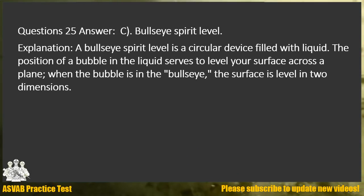Question 25. Answer C. Bullseye spirit level. Explanation: A bullseye spirit level is a circular device filled with liquid. The position of a bubble in the liquid serves to level your surface across a plane. When the bubble is in the bullseye, the surface is level in two dimensions.